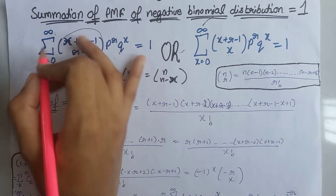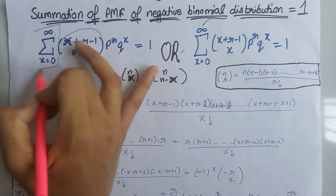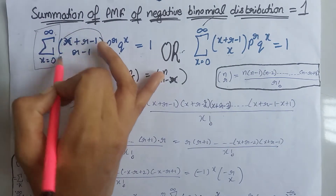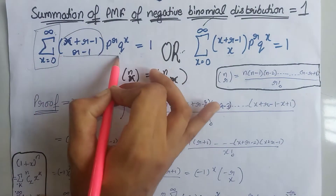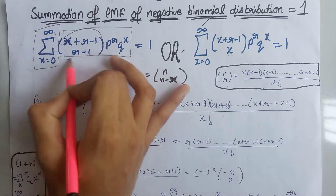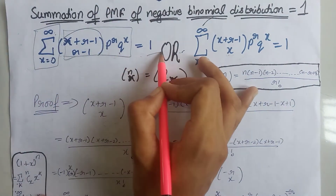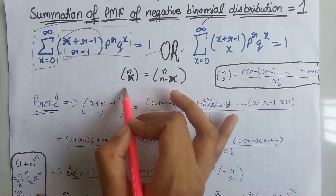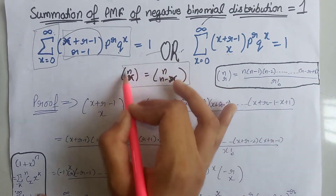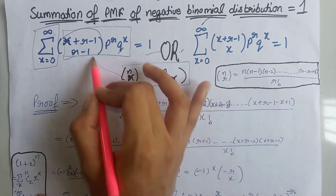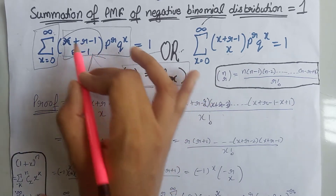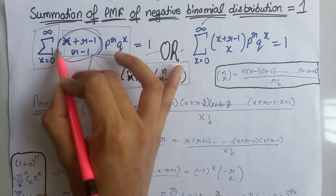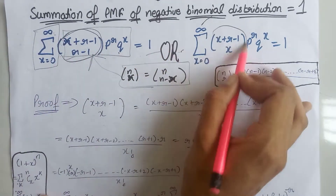Now we will prove that the summation over all values of x of the PMF of the negative binomial distribution is equal to 1. We can apply this combination formula here, which means we can write this term as shown.